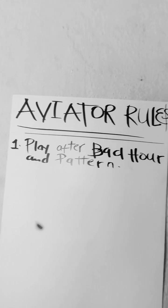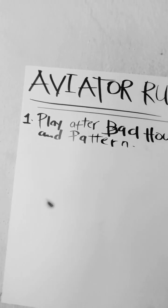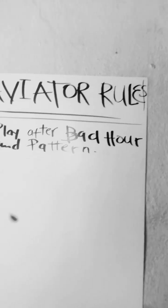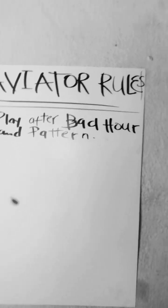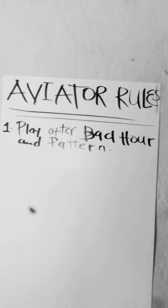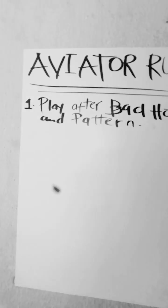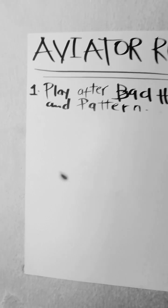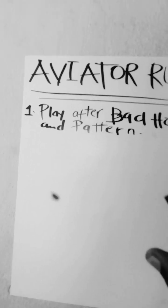You should stop treating Aviator like your mama's purse where you just walk in, get some money, and dip. You should have the time to observe certain things like a bad hour and a pattern before you start playing, because these are the indicators that Aviator has already taken people's money and is now about to start giving people some money.